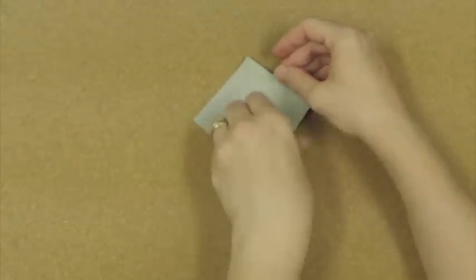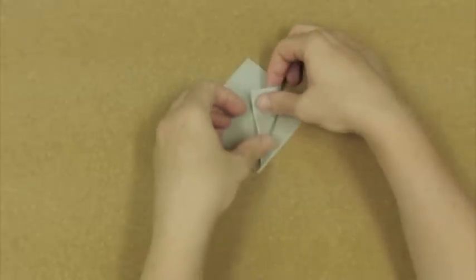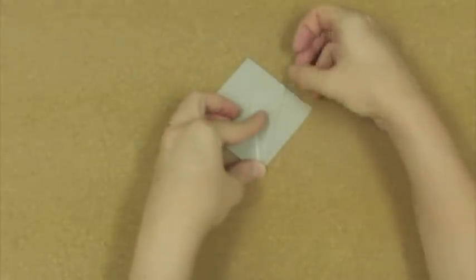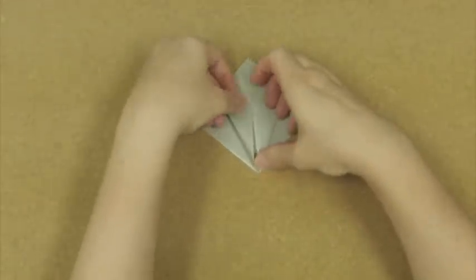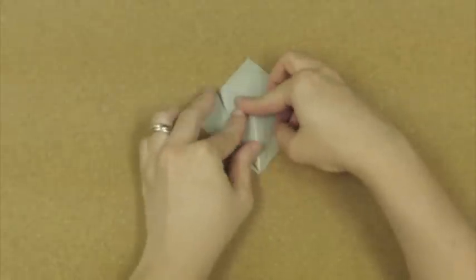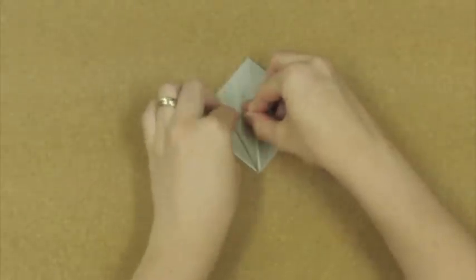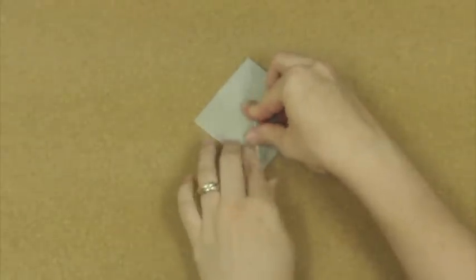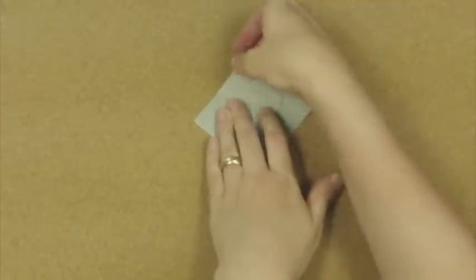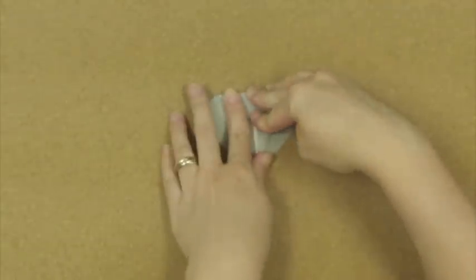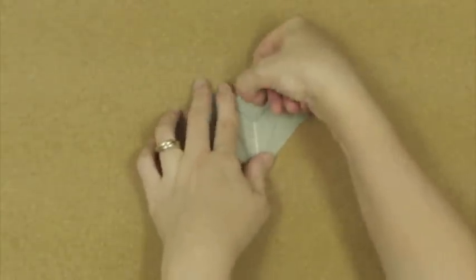What we're going to do next is fold in these side folds to the center, and then fold this top part down. These are just some preliminary creases to help us with the next fold.